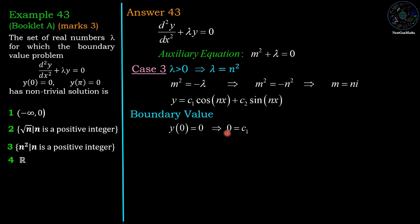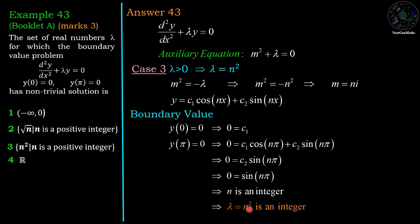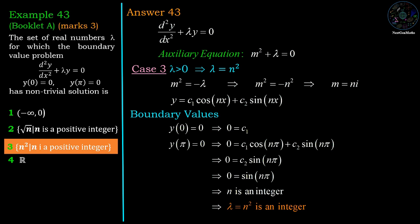With c₁ = 0, applying y(π) = 0 gives 0 = c₂sin(nπ). For a non-trivial solution we need c₂ ≠ 0, so sin(nπ) = 0, which holds for all integer values of n. Therefore λ = n² where n is an integer. Since positive and negative integers give the same set, the answer is {n² : n is a positive integer}, which is the third option.